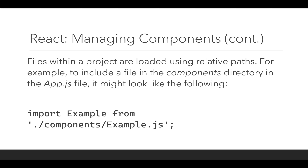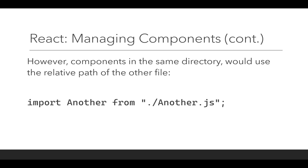What if one file was in the same directory as another? If we're importing components across the same directory, it works the same way — using relative paths, so the dot-slash. If we wanted to import the file 'another', which was in the same directory we were currently working in, we would say dot-slash and then the name of that file.